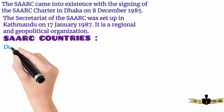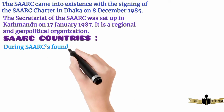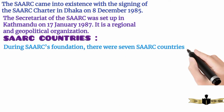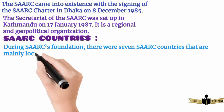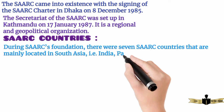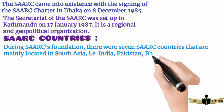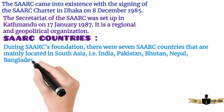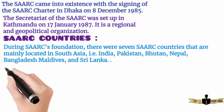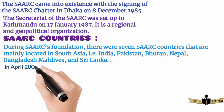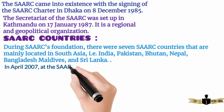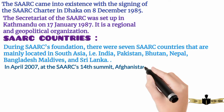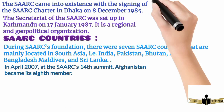During SARK's foundation, there were seven SARK countries that are mainly located in South Asia: India, Pakistan, Bhutan, Nepal, Bangladesh, Maldives, and Sri Lanka. In April 2007, at the SARK 14th summit, Afghanistan became its eighth member.